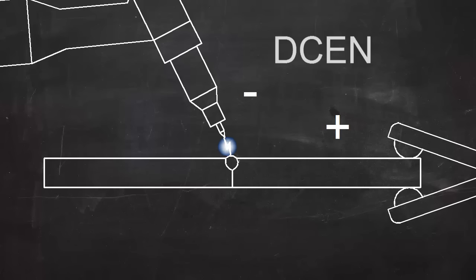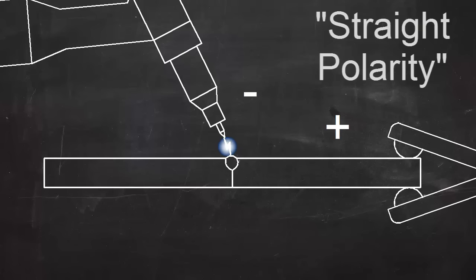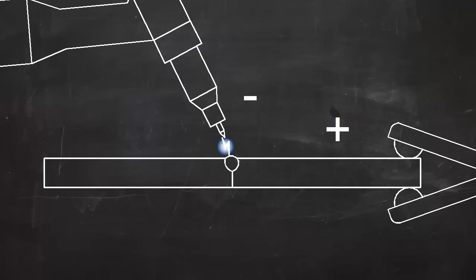The term DCEN is used for this, indicating that the current is DC, and the electrode is negative. This is also called straight polarity, but DCEN is a more descriptive term. DCEN puts most of the heat on the workpiece, and it's the most common setup.